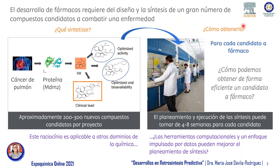Answering the question of how to obtain a compound can limit our research cycle, especially when we need to synthesize a large number of molecules at scale. In the pharmaceutical industry, approximately 200 to 300 molecules are tested per project, and planning and executing the synthesis for each candidate takes approximately 4 to 8 weeks. These timelines, though already optimized, still require radical and innovative changes in the development and execution of synthesis.